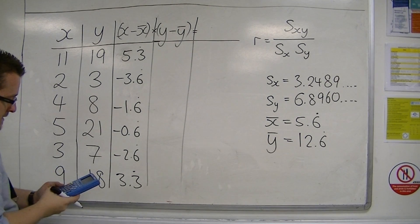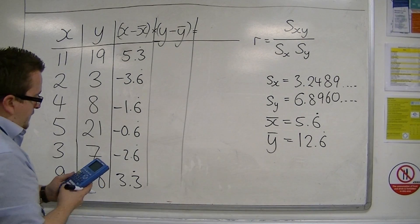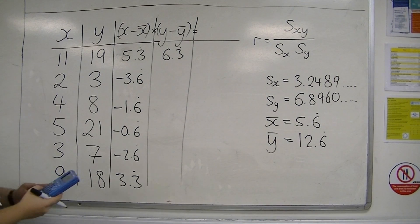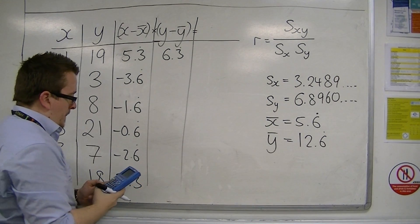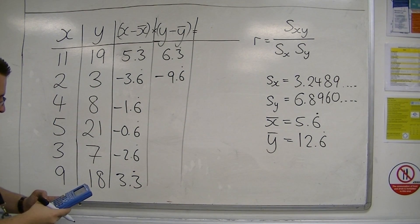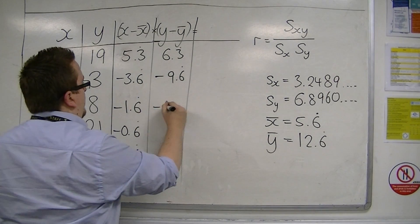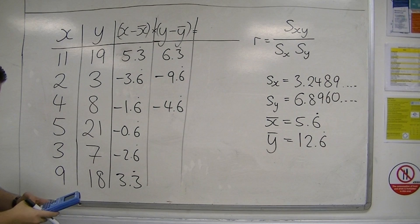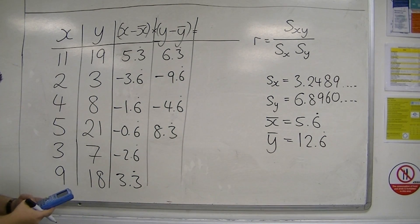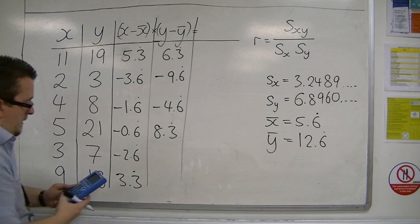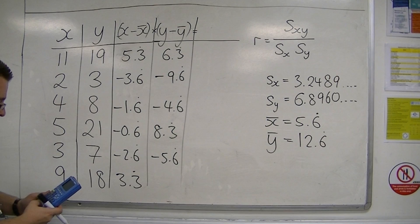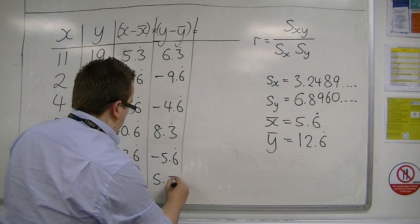Now the y-bars. So ȳ is 12.6 recurring. So 19 take away 12.6 recurring is 6.3 recurring. Then we've got 3 take away 12.6 recurring is minus 9.6 recurring. 8 take away that. You can see why this isn't a particularly good way to do it. It's just quite long-winded. Next one, 8.3 recurring. Then we've got 7 take away 12.6 recurring minus 5.6 recurring. Then 18 take away 12.6 recurring is 5.3 recurring.